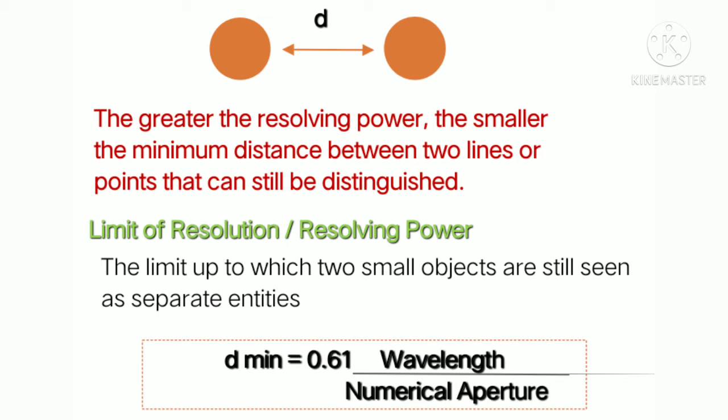Always remember: greater resolution means a smaller distance between two points or entities. The limit of resolution, or resolving power, is the limit up to which you can identify two objects in an image as different entities. The formula for this is: distance = 0.61 × wavelength (λ) / numerical aperture (NA).